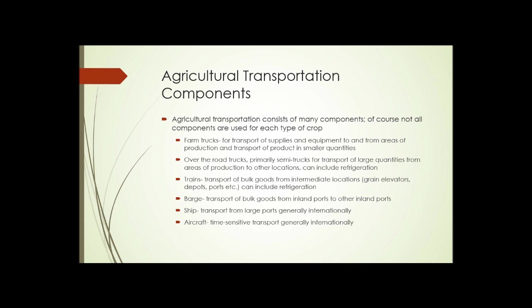Next, we have over-the-road trucks, which are primarily semis for transport of large quantities of materials from areas of production to other locations. Those other locations could be the final sale location, a processing facility, or an intermediate transportation facility such as a port or grain elevator. These trucks can include refrigeration, so goods requiring refrigeration can be easily transported by truck.